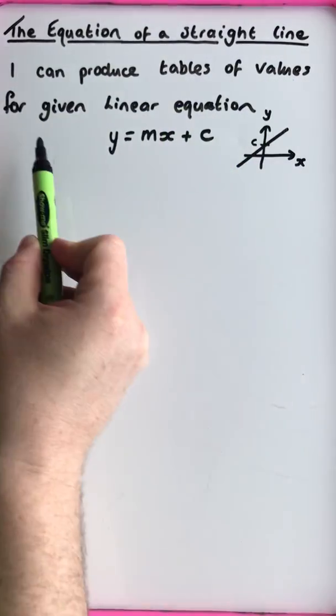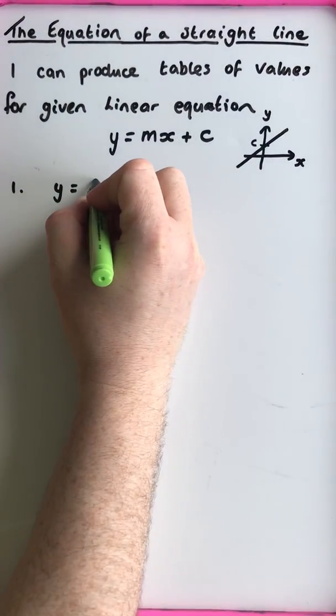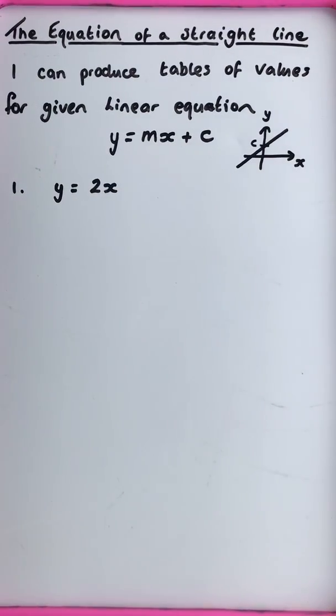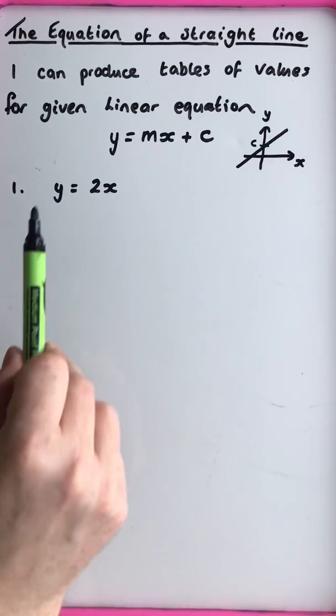You're going to produce a table of values for a given linear equation. The first example is y equals 2x. The equals sign tells you that the left-hand side is equal to everything to the right of the equals sign, so all the y values are equal to 2 times the x values. Let's set up a table of values with x at the top and y at the bottom, and look at some numbers on the number line. We'll go from 0 and do a couple either side of 0.